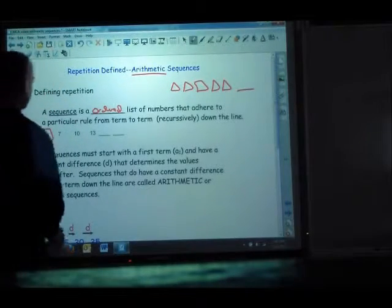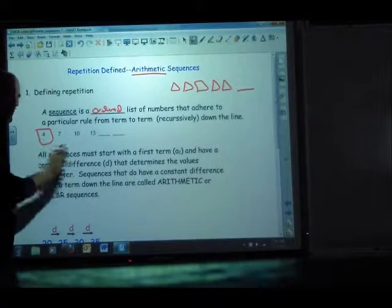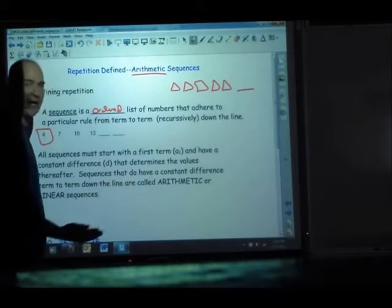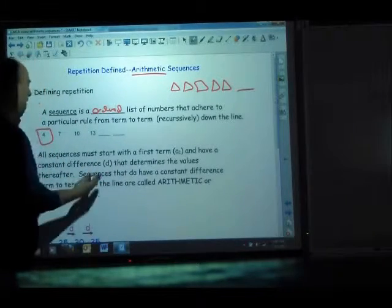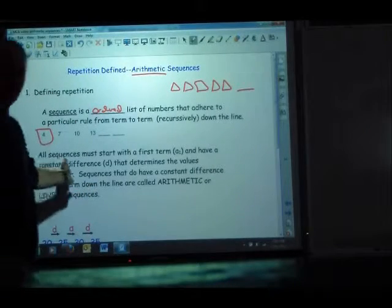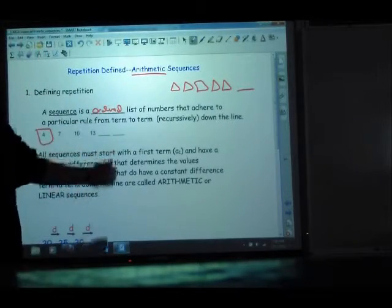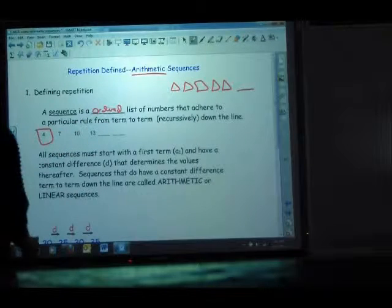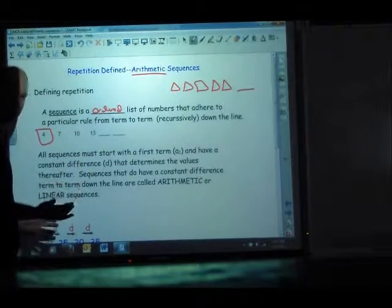Now, an arithmetic sequence is one where you're consistently adding or subtracting the same value to go down the line of the sequence. So if you look at this, 4 leads to 7, leads to 10, leads to 13, I bet you can figure out I'm just adding 3 each time.